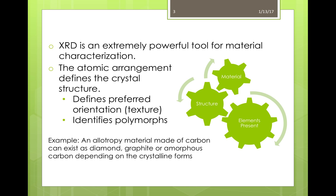A polymorph is a material with the same composition but different structure. The best example is carbon. Carbon can either form graphite or diamond, or even an amorphous structure, depending on its crystalline form. So in the case of carbon, it's extremely important to not only identify that the element carbon is present, but also the structure that it takes, to understand what material you're working with.